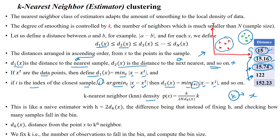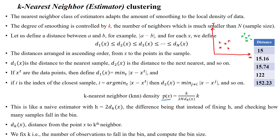The density can be estimated using the formula: probability of the distance to x equals k divided by 2 times n times dk(x), where dk(x) is the distance from point x to the k-th neighbor. This value defines the density estimation.